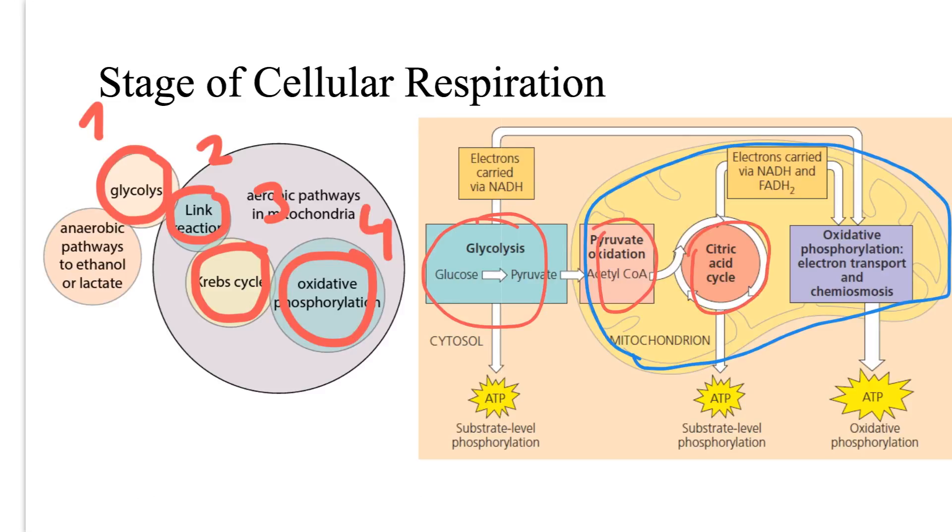The Krebs cycle, the other name is citric acid cycle, is in the mitochondrion. And again, the oxidative phosphorylation stage is in the mitochondrion.